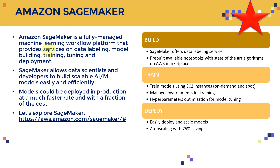So that covers data labeling, model building, training, tuning, and deployment. SageMaker allows data scientists and developers to build scalable AI and machine learning models easily and efficiently, and models can be deployed in production at a much faster rate and with a fraction of the cost.